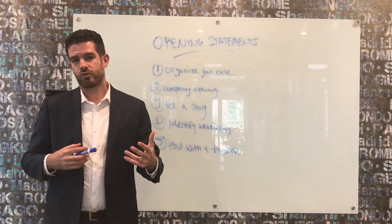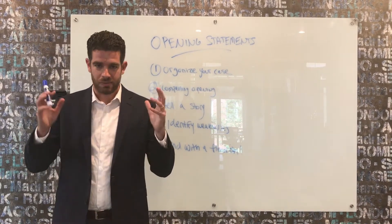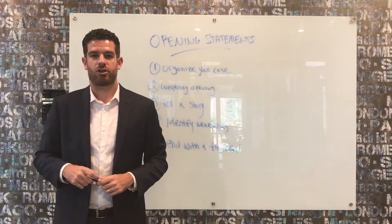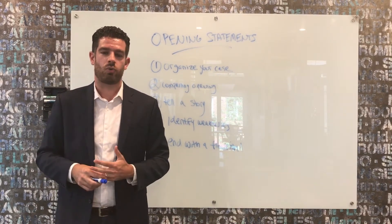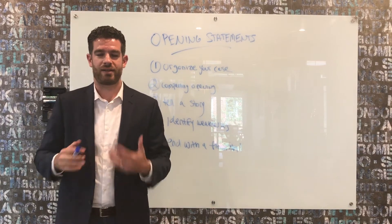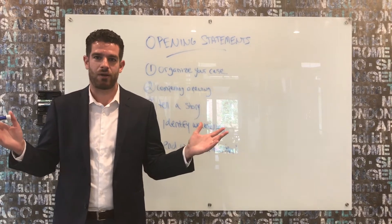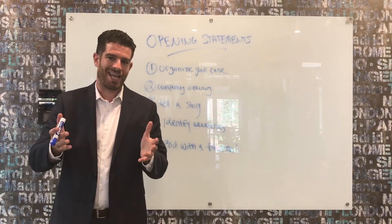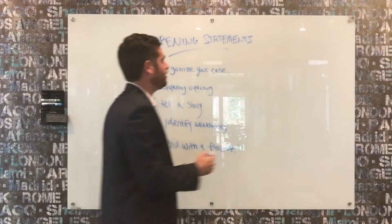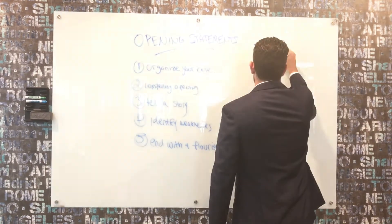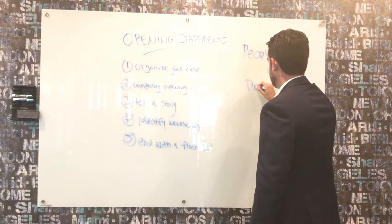I wanted to use a model case to illustrate some points over the course of this talk. When I was a prosecutor, I used to be obsessed with talking about the Wizard of Oz — in jury selection classes and sometimes in opening statements. I felt like everybody really knew the Wizard of Oz, whether you were young or old. So our test case is People of the State of New York versus Dorothy Gale.